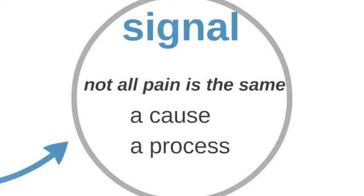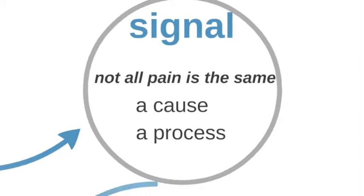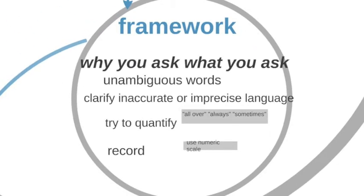Pain can be the signal of a cause or it may be a symbol of a process, and so may not be related to one distinct anatomic lesion. You need a framework in which you ask as much as you can about pain, and you need to understand why you ask what you ask. Use unambiguous words, clarify inaccurate or imprecise language used by the patient, and try to quantify things — patients commonly use terms like 'all over' or 'always' — so that the record can be referred to when assessing the patient's progress.